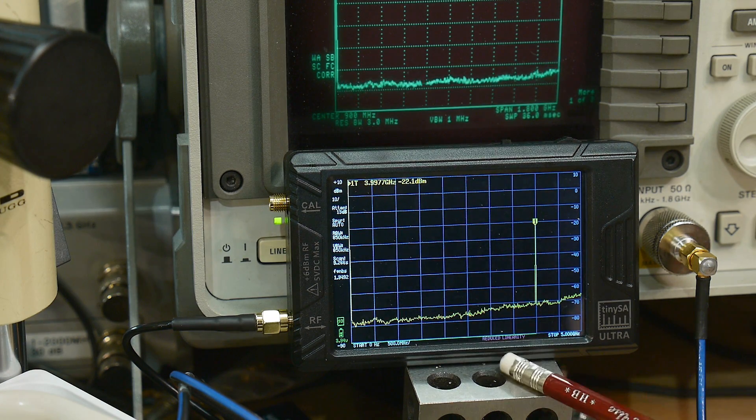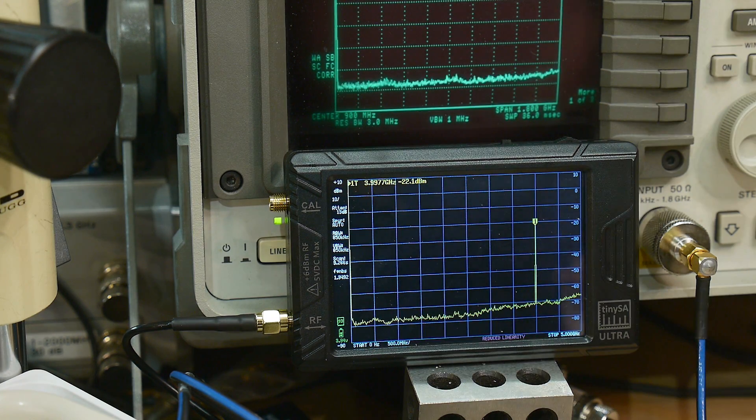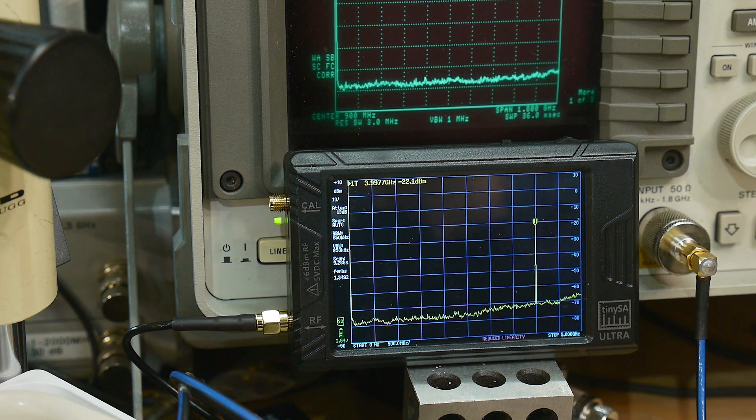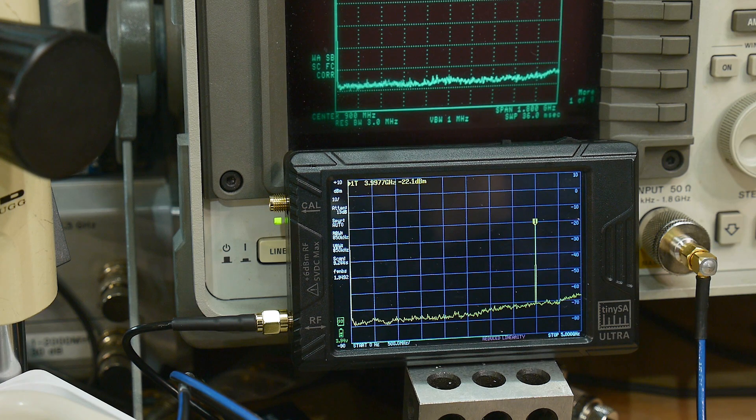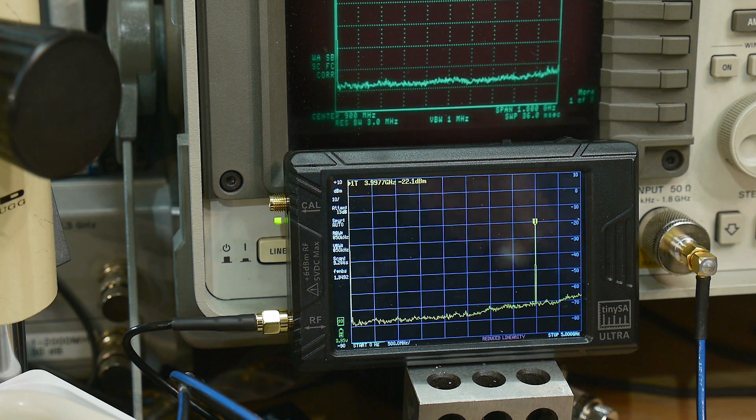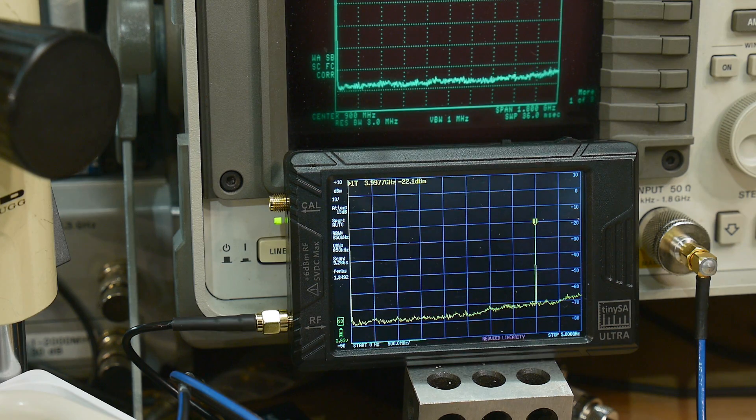It does have a little sign here that says reduced linearity and that's in the wiki page. And be aware that it is outputting some spurs. So, let's go ahead and measure those directly.